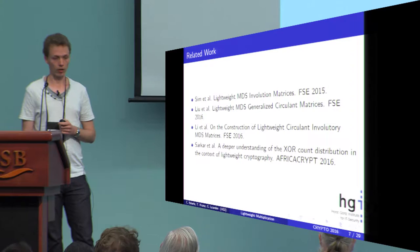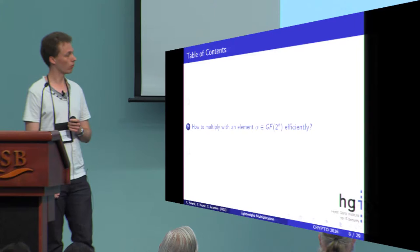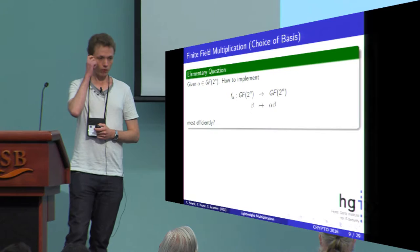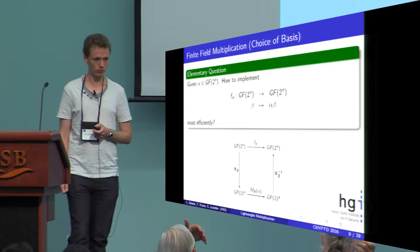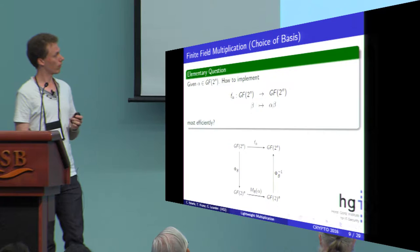Let me first go to this question: how to multiply with an element alpha most efficiently. We have given such an element, and we want to consider the function F_alpha, which maps an element beta to the element beta multiplied by alpha.